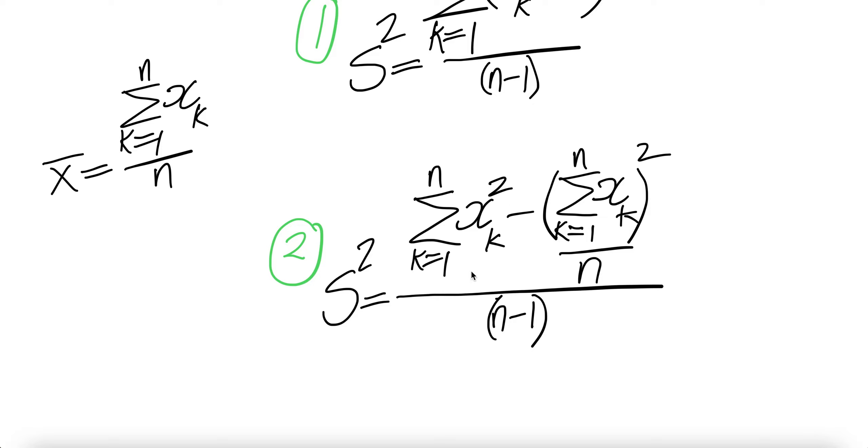And then here we need to, we have the n observations. You need to square individual x observations. So for example, x1 you get x1 square, x2, x2 square, and x3, x3 square, and so on to xn, xn square. And then sum them, you get that.